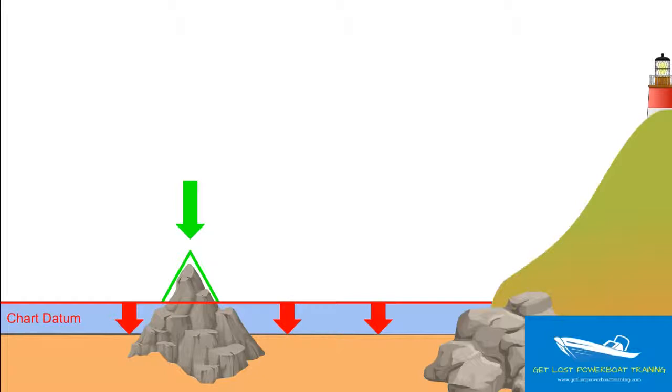Sticking out above chart datum, that peak of rock is a drying height. This is a level that covers and uncovers with the tide, depending on how much water there is, because we have to add the height of tide on top of chart datum.